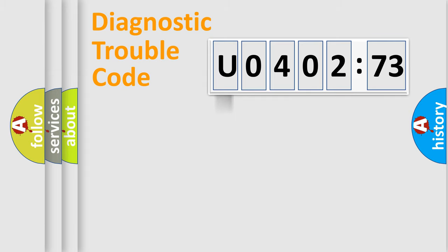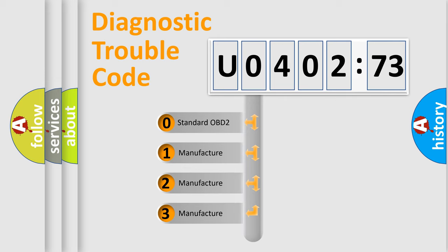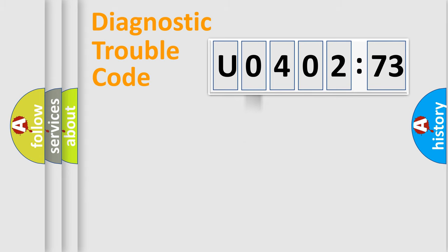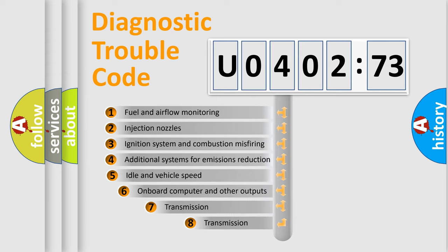Powertrain, Body, Chassis, Network. This distribution is defined in the first character code. If the second character is expressed as zero, it is a standardized error. In the case of numbers 1, 2, 3, it is a manufacturer-specific error.